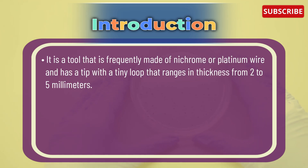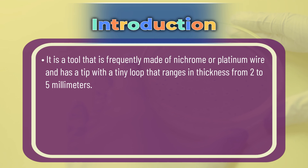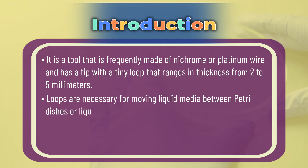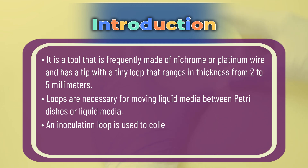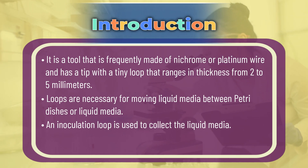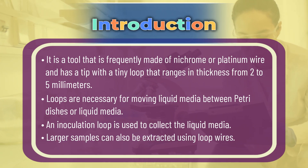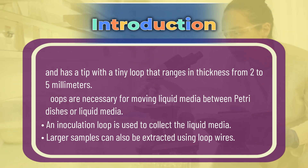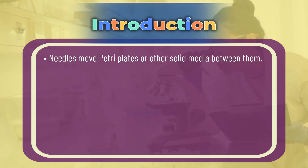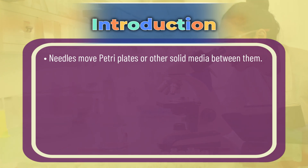It is a tool frequently made of nichrome or platinum wire and has a tip with a tiny loop that ranges in thickness from two to five millimeters. Loops are necessary for moving liquid media between petri dishes. An inoculation loop is used to collect liquid media; larger samples can also be extracted using loop wires.